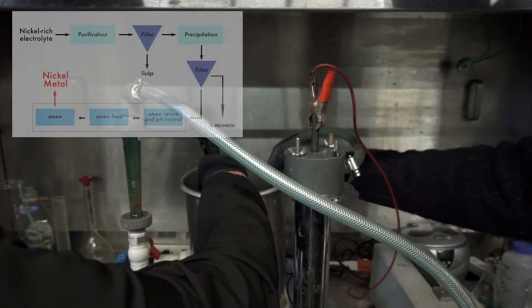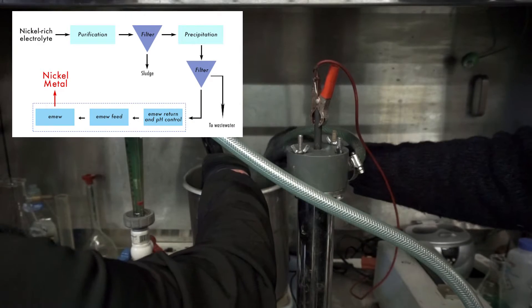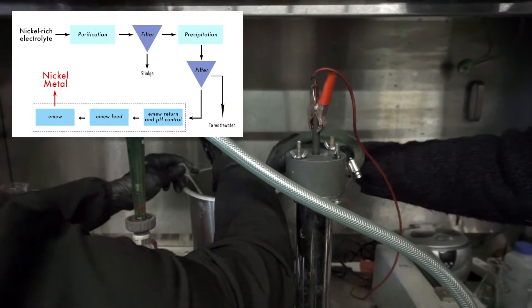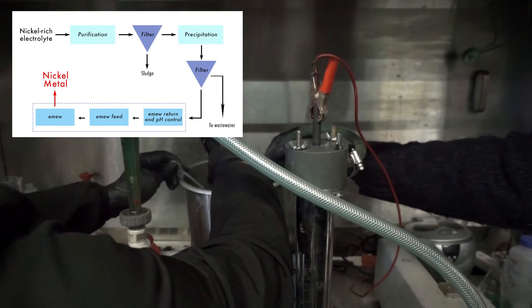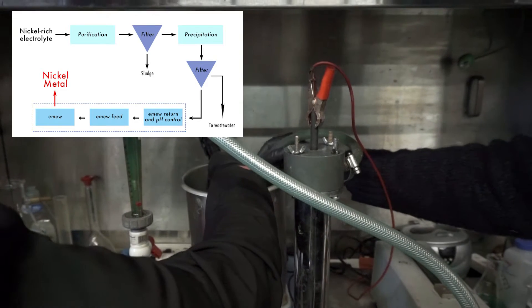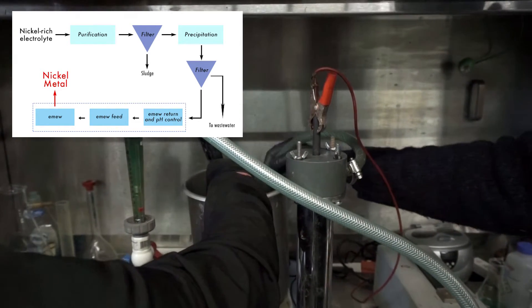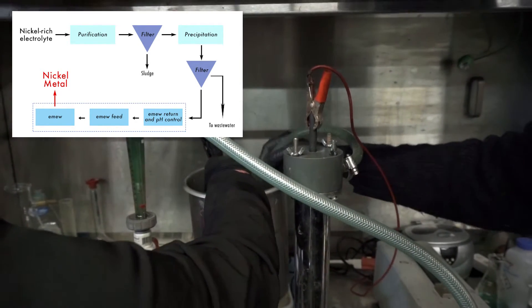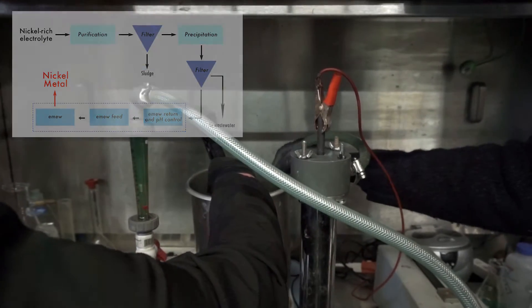Today we will be demonstrating how EMU technology can electrowin nickel from solution to produce high quality cathode. Once the EMU lab cell has been set up for electrowinning, the system is activated at a specific current density, temperature, and is run for a specified amount of time.